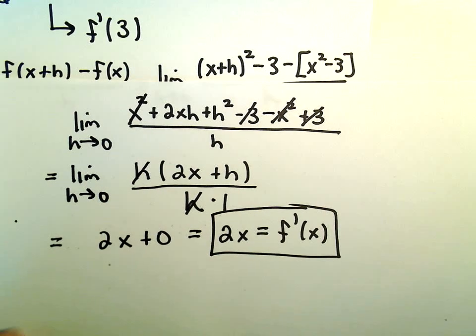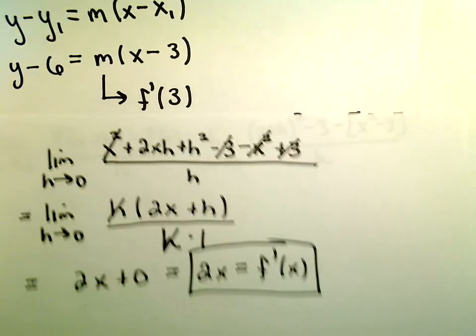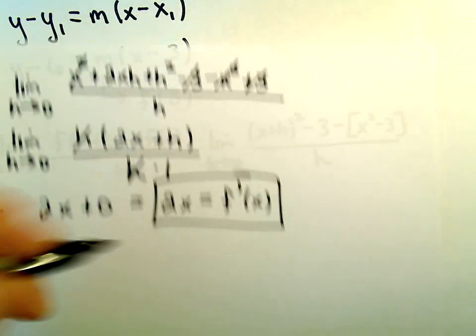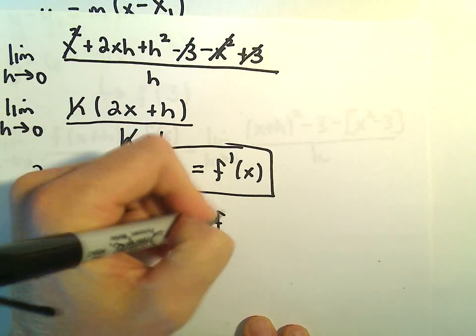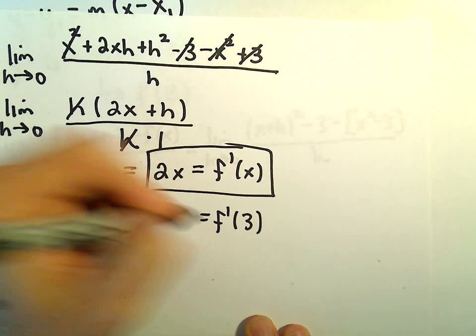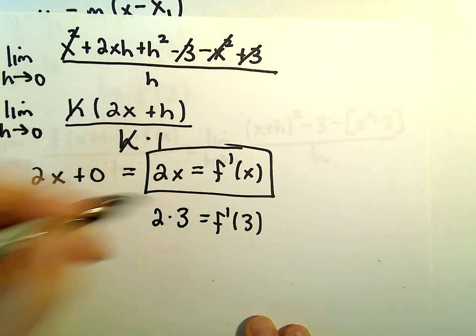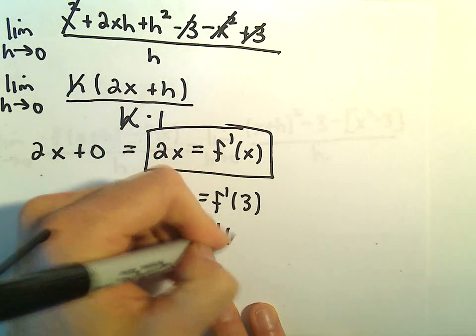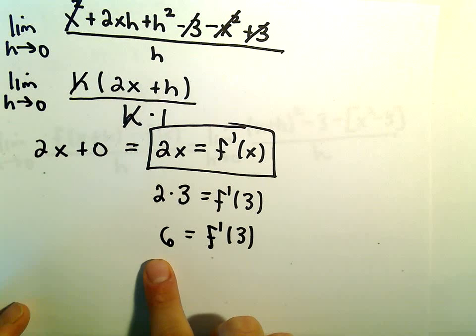The only thing we were missing was plugging in the value of 3 to get the slope of the tangent line. If we plug in 3 into our derivative, we get 2 times 3, which is 6. So the derivative evaluated at 3 is 6.